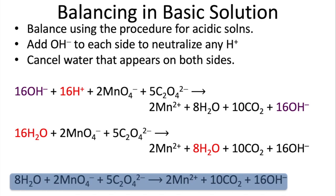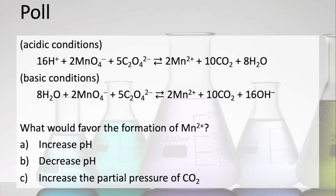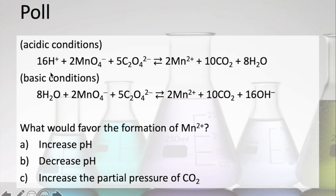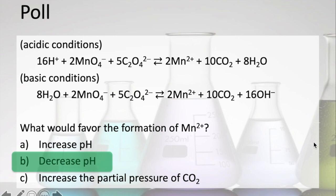Now you may be wondering why we do reactions in acidic or basic solution. One reason is it allows us to drive the reaction in the direction that we want. For example, if we wanted to make Mn²⁺, would it be better to do it under acidic or basic conditions? Under acidic conditions there would be a lot of hydrogen ions around, and our hydrogen ions are on the left side — so adding more H⁺ drives the equilibrium to the right, helping us make more Mn²⁺. In basic conditions, we have a lot of OH⁻ and that's on the right, which would drive the reaction to the left and decrease the amount of Mn²⁺ made. So this reaction works better and produces more Mn²⁺ under acidic conditions — decreasing the pH would be the right thing to do.